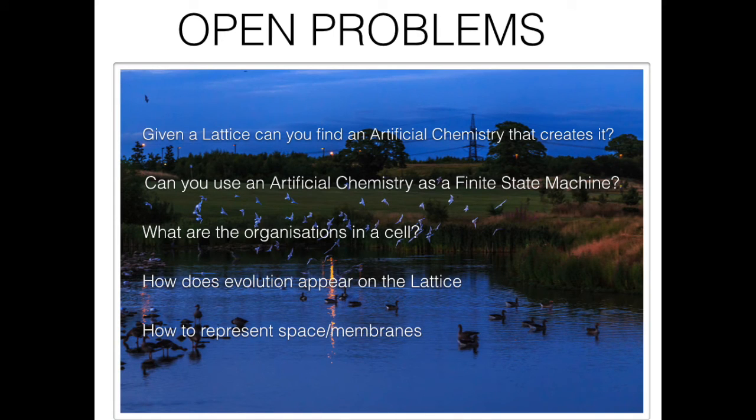And by the way, there's a lot of open problems. So don't think that this finishes here. For example, given a lattice, can you find an artificial chemistry that creates it? And without just asking one of your students. Another one, this is normally the standard way of doing it. Another way is that if you have an artificial chemistry, can you use it as a finite state machine? Because the artificial chemistry stays in an organization and then you send a molecule and that's a signal and it moves it into another state. So that's a finite state machine. Can you actually use it like that? Can you design it so that it works in this way? So about what are the organizations inside the cell? And how does evolution appear on the lattice? I mean, is it true, as Walter Fontana said, that you are actually going up in a hierarchical system? And I had some paper in the past that showed that it's not always like that, unfortunately. And how do you represent space and membranes? And I think this is it.